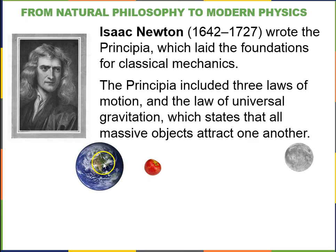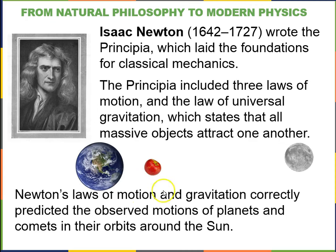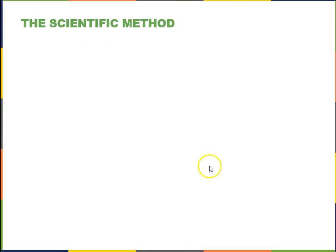Maybe that same force is reaching out through space and pulling the moon toward the center of the earth as it orbits, which is correct. So Newton's laws of motion and gravitation correctly predicted observed motions of planets and comets in their orbits, mostly around the sun. So that's a bit of history.